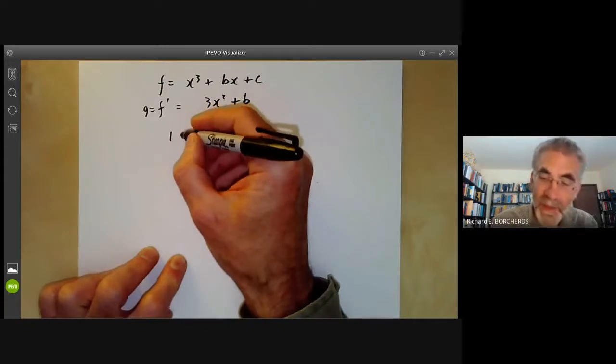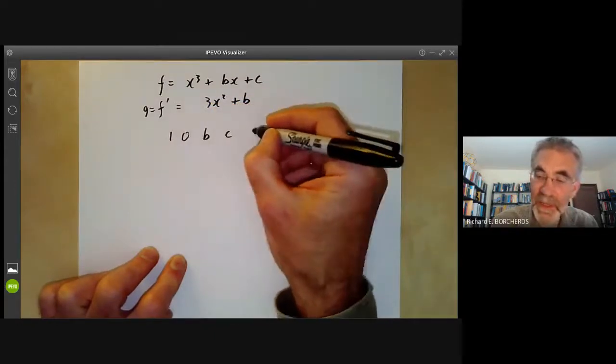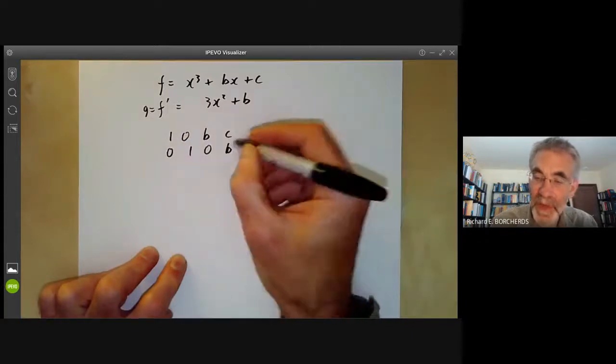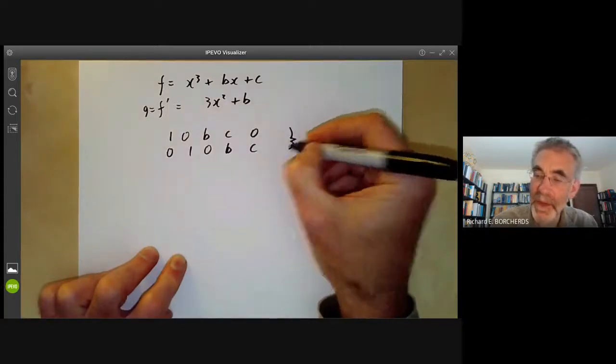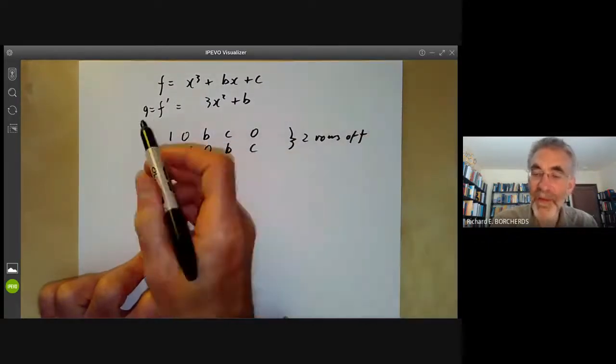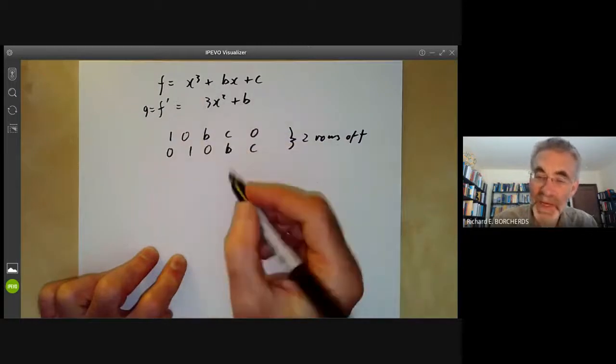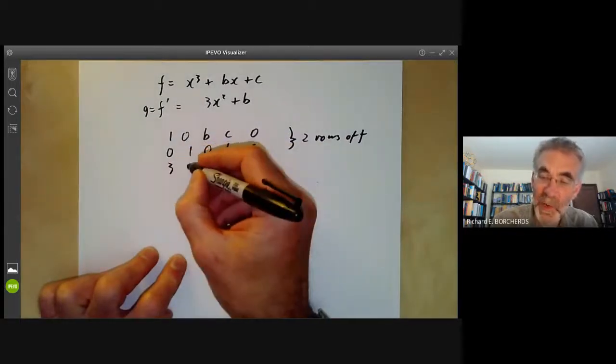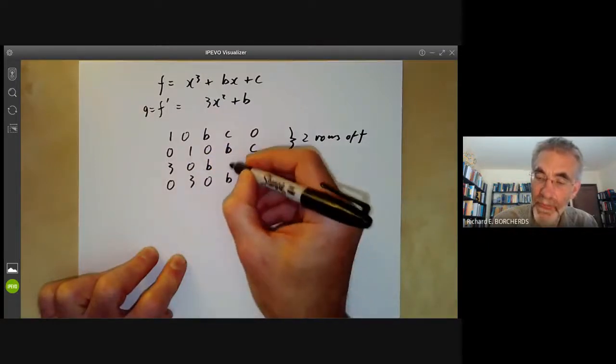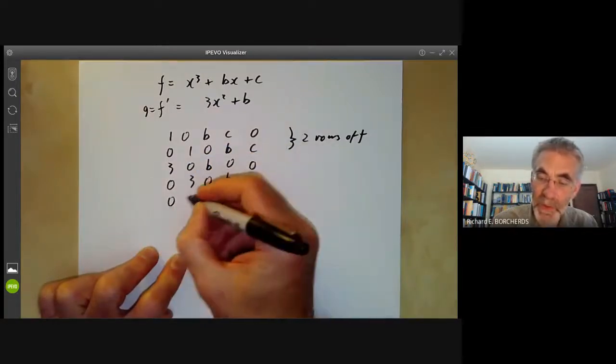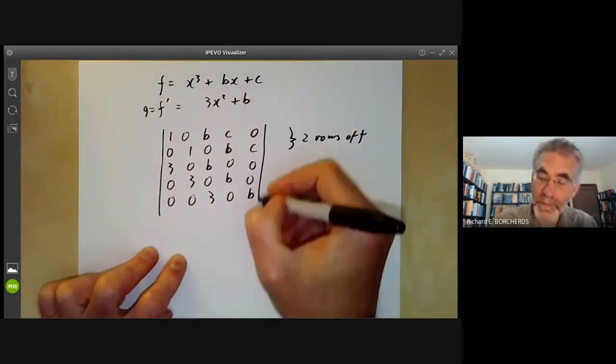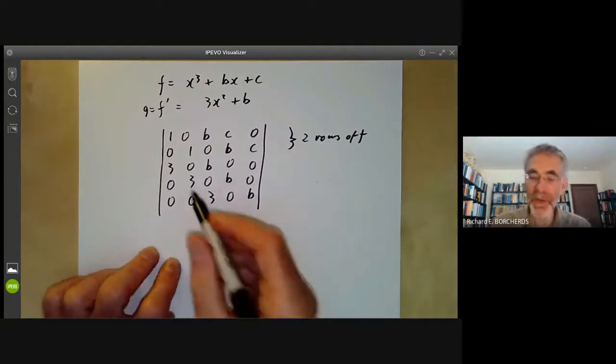And then we look at the Sylvester matrix, which looks like this. It goes 1, 0, b, c, 0, 0, 1, 0, b, c. So these are the two rows of f. And then we have to put in the coefficients of b three times. So we get 3, 0, b, 0, 3, 0, b, 0, 0, 3, 0, b.